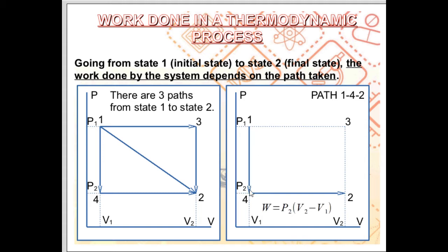Going from state 4 to final state 2, the volume changes from V1 to V2 and the pressure is constant at P2. Taking pressure P outside the integration and integrating dV, the work done equals P2 times (V2 − V1). Therefore, the total work done along path 1→4→2 is P2(V2 − V1).